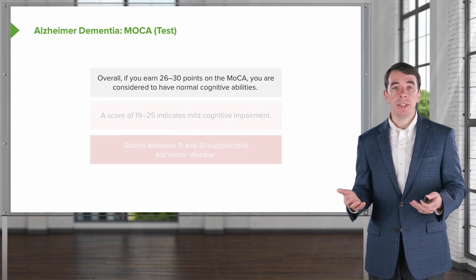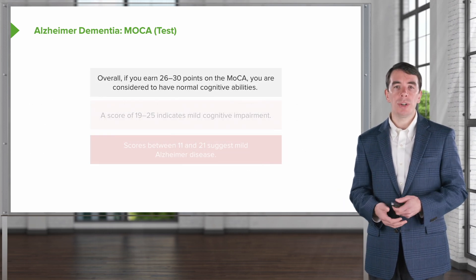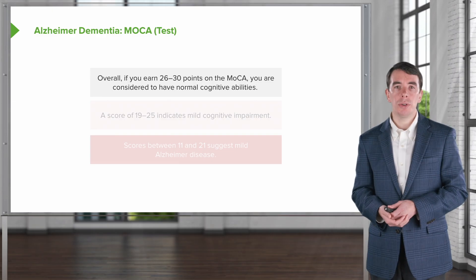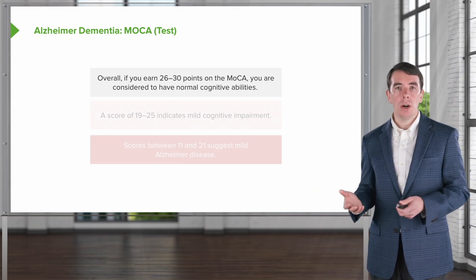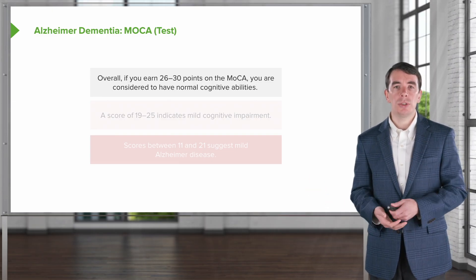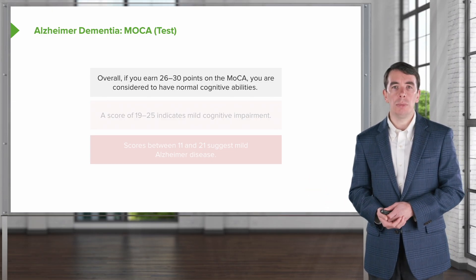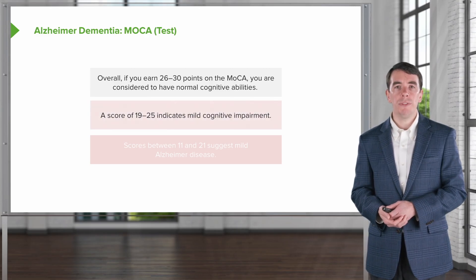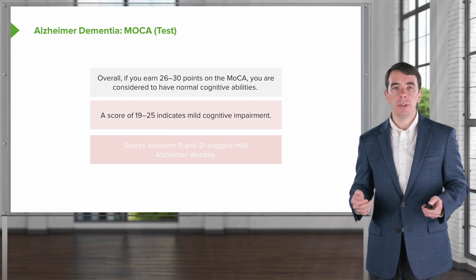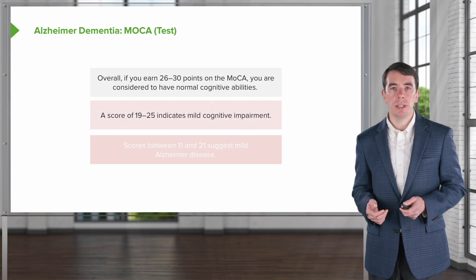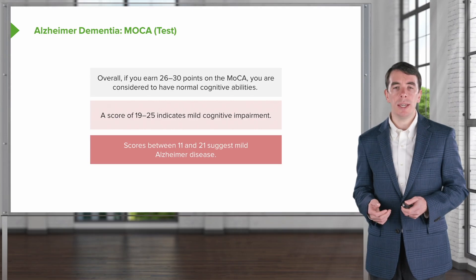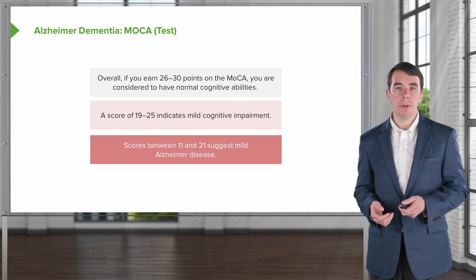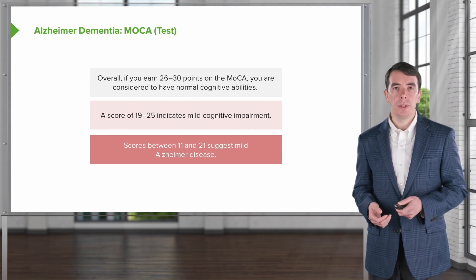Like the MMSE, the MOCA is scored out of a total of 30. Scores between 26 and 30 are normal, indicating normal cognitive abilities. A score of 19 to 25 indicates mild cognitive impairment, and scores less than 21 indicate more advanced mild, moderate, or severe dementia.